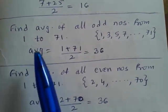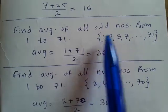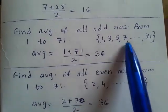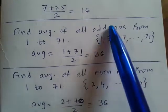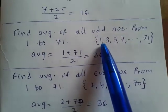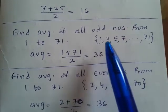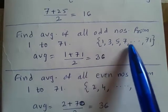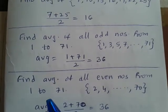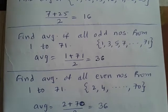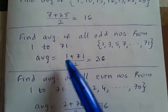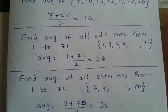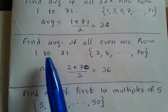Find the average of all odd numbers from 1 to 71. These are odd numbers, so the difference between consecutive numbers is common — that is 2. Since the difference is common, they are equidistant, and we apply the same formula: (first number + last number) upon 2. That gives (1 + 71) divided by 2, and the answer is 36.